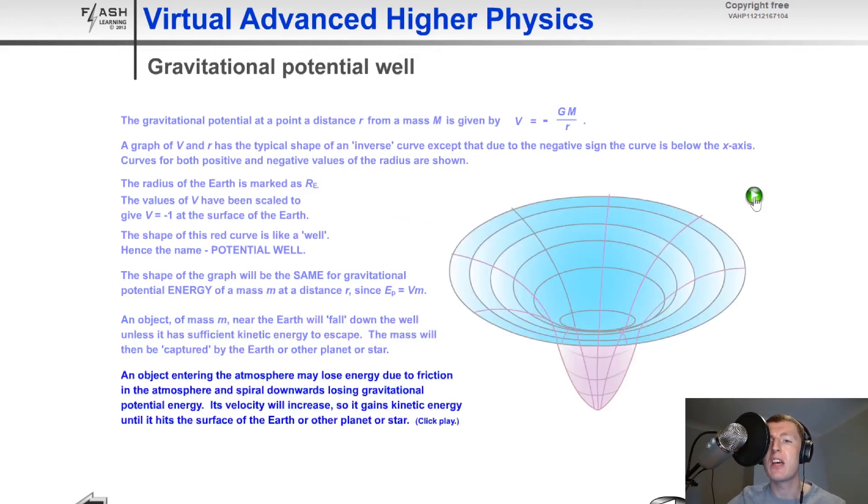So if we look at this, you'll see that the mass is moving round and round in a sort of spiral motion until it gets to the bottom of the well. And it says there that an object entering the atmosphere may lose energy due to friction in the atmosphere and spiral downwards losing gravitational potential energy. Its velocity will increase, so it gains kinetic energy until it hits the surface of the earth or other planet or star.